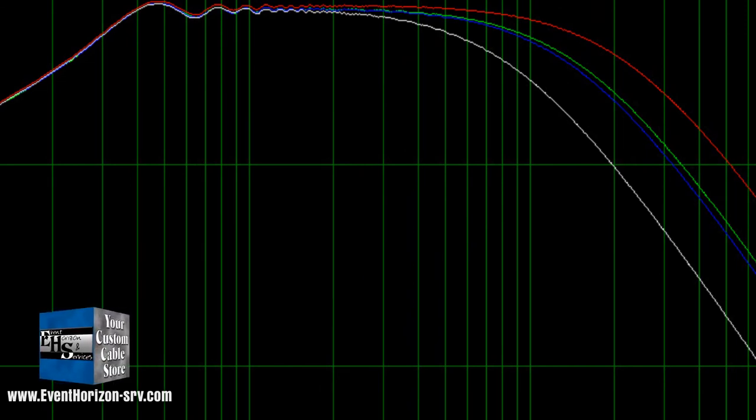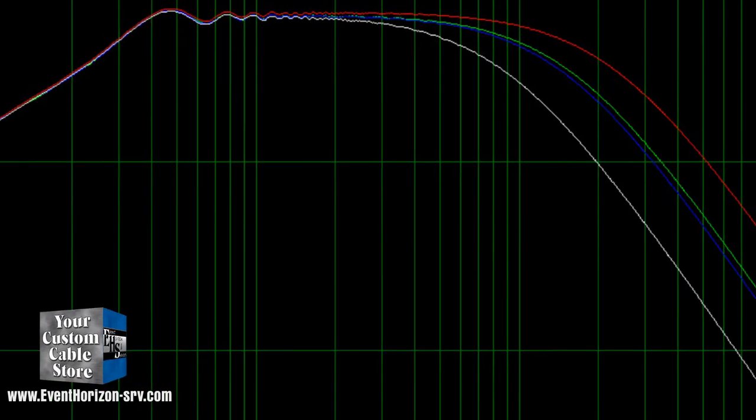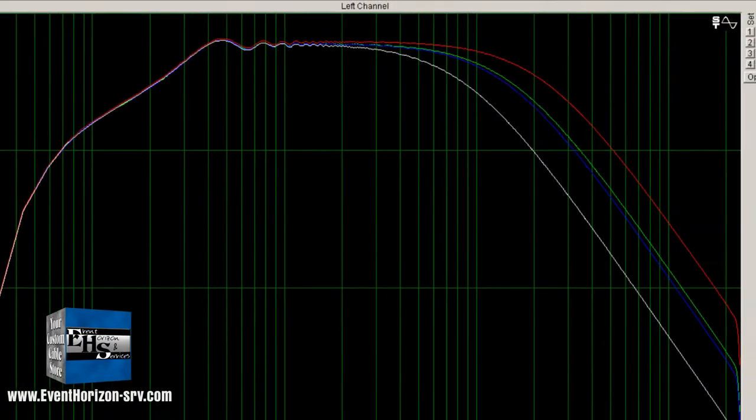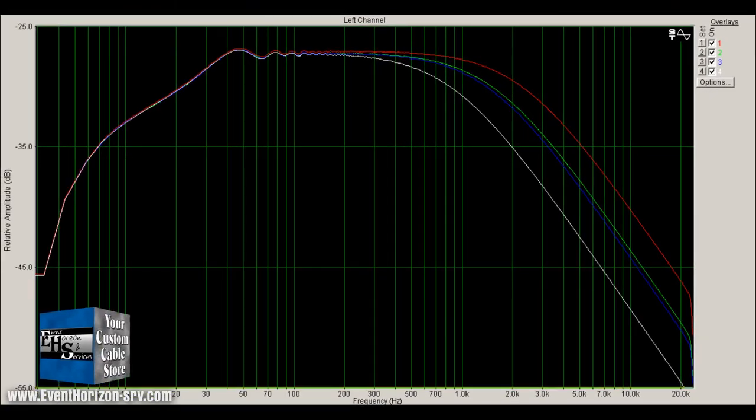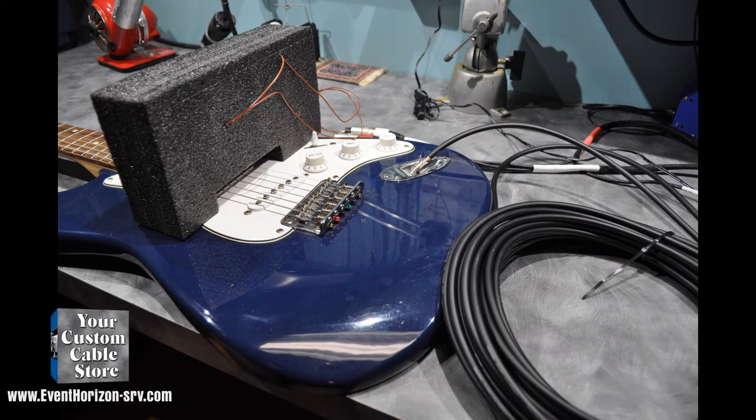The green line is snake wire with low to ground and the blue line is 2319. These are really close. The snake wire came out a hair better than the simulation, and the white line is snake with conductors tied and as expected came out the worst.